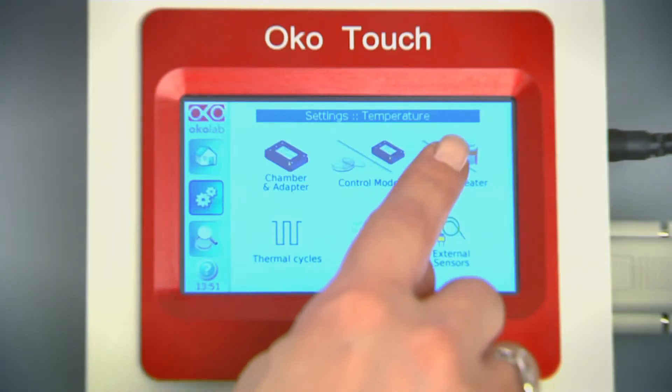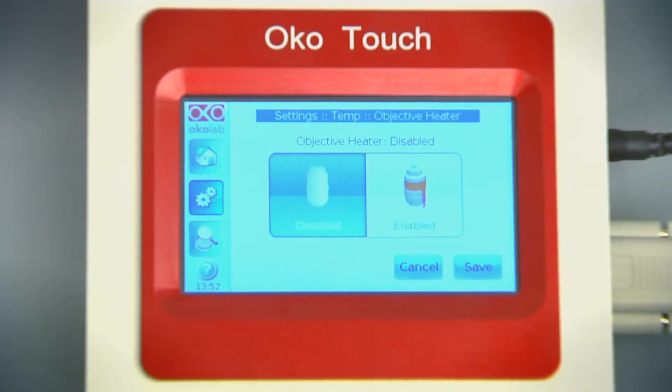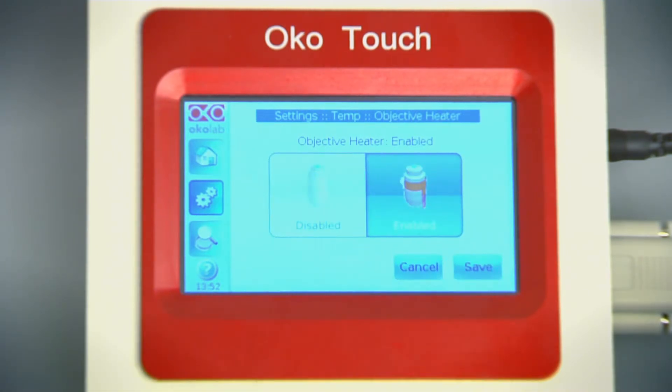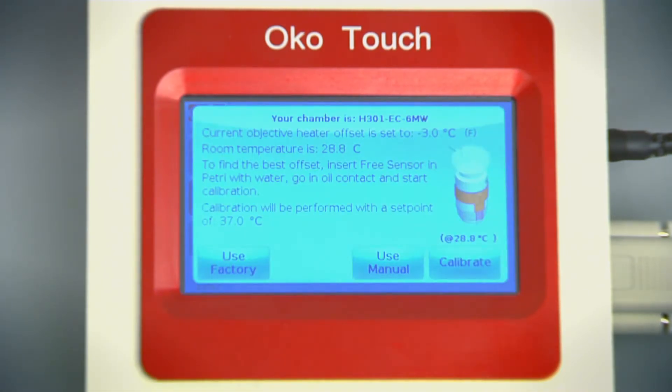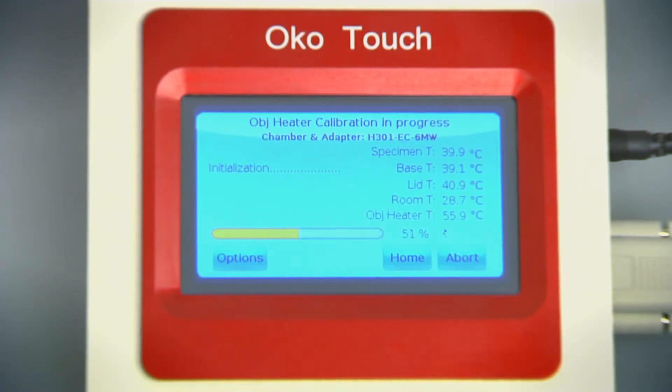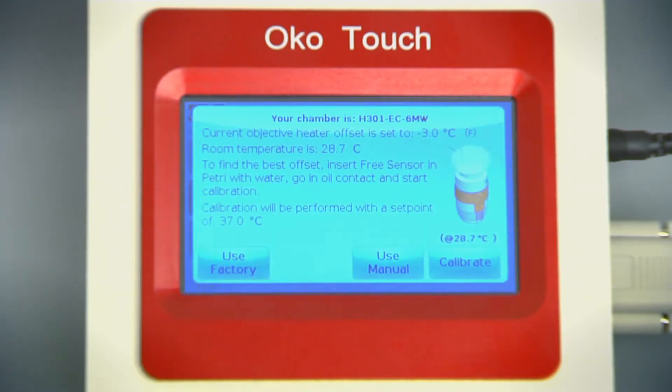Calibrating the objective heater could not be easier. The automatic routine modifies the settings of the objective heater until the desired temperature is obtained inside the reference well. Calibration data can be stored as a function of room temperature and recalled at need.